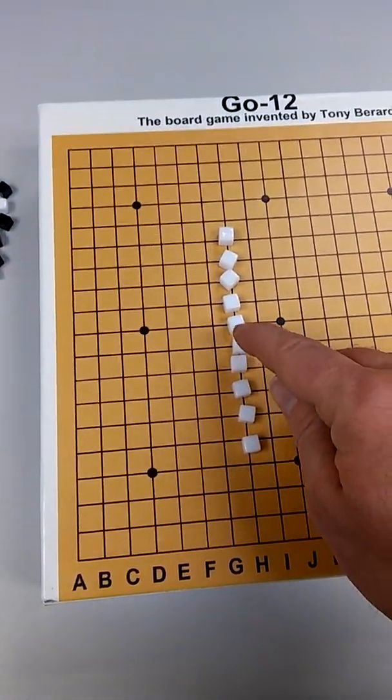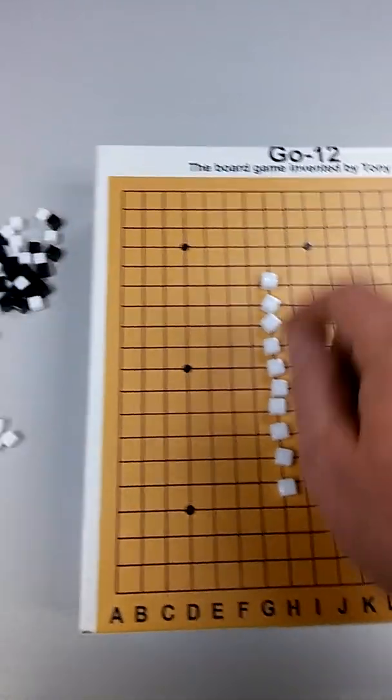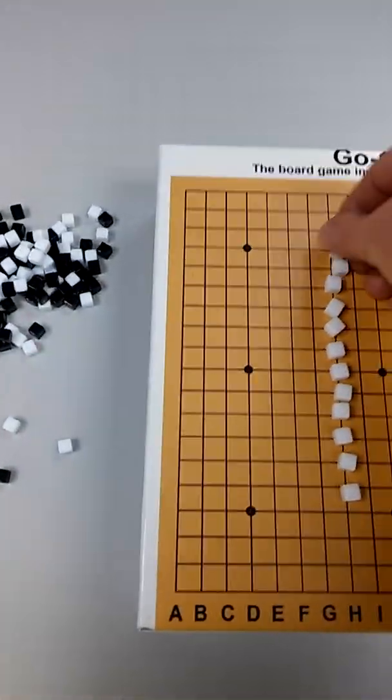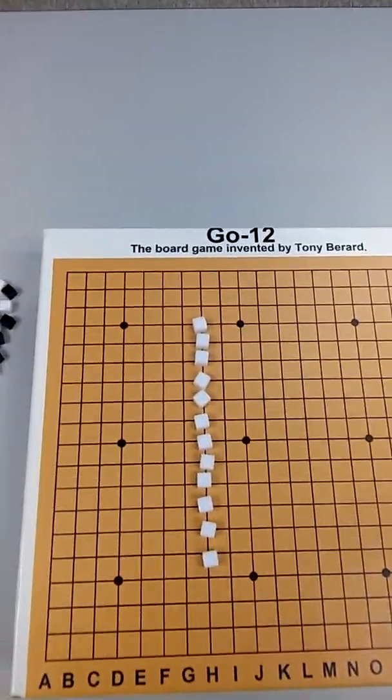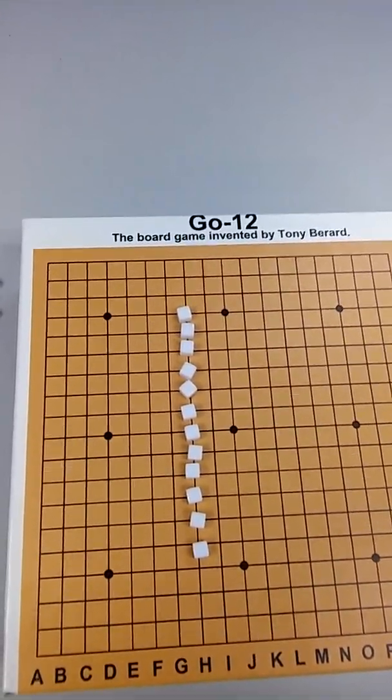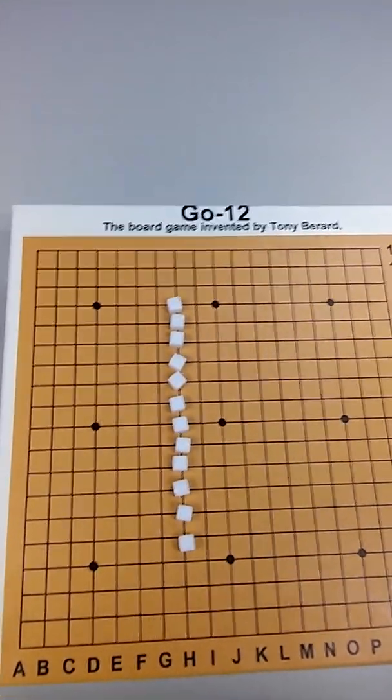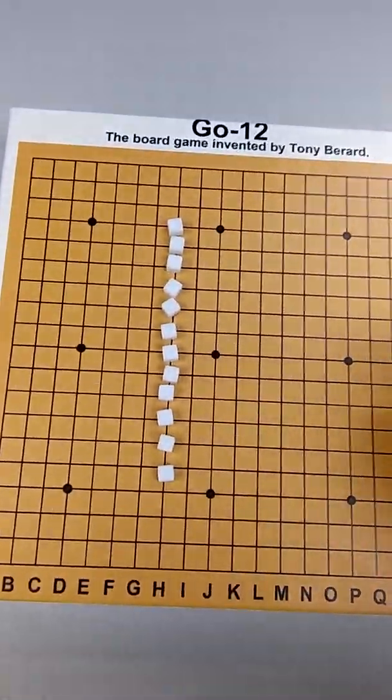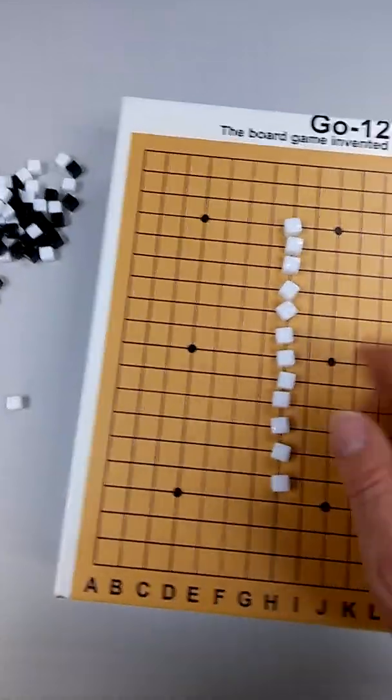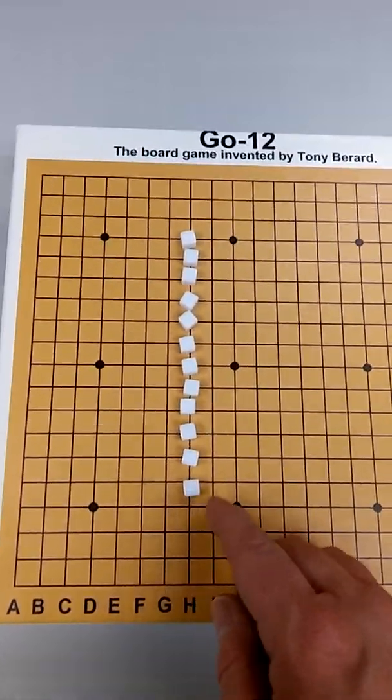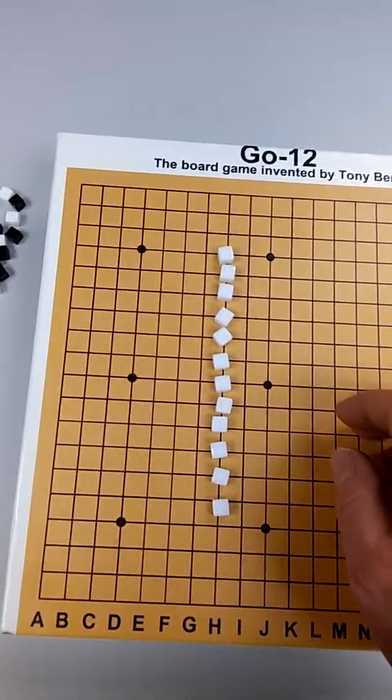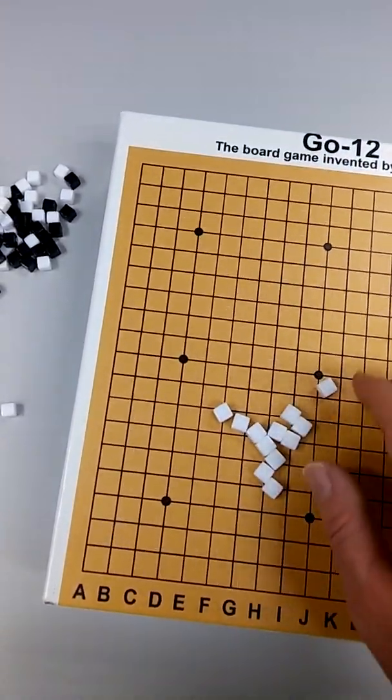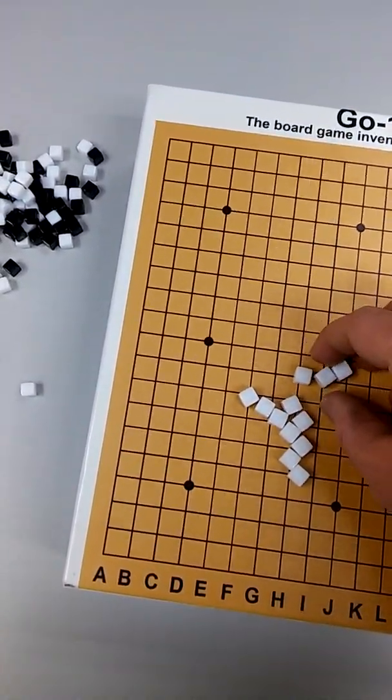12 in a row like this. One, two, three, four, five, six, seven, eight, nine, 10, 11, 12. So this is a 12. This would be a vertical 12. You can also have a 12 diagonally or horizontally. So that would be a one by 12.